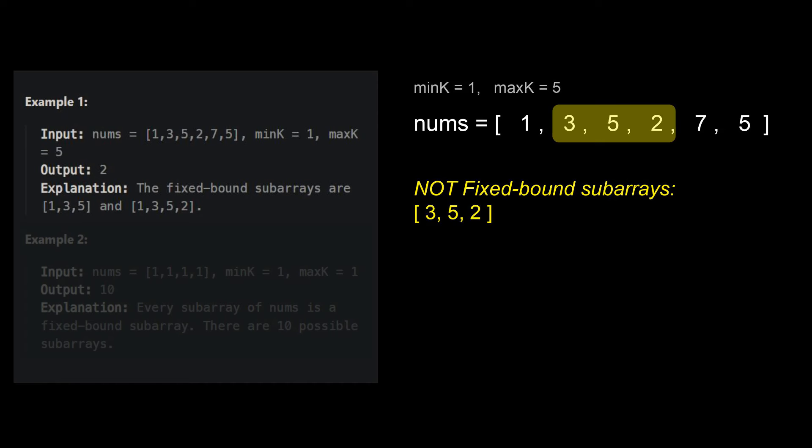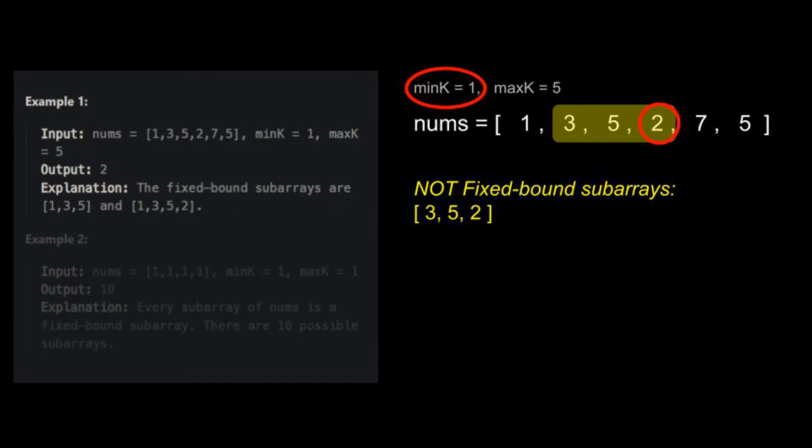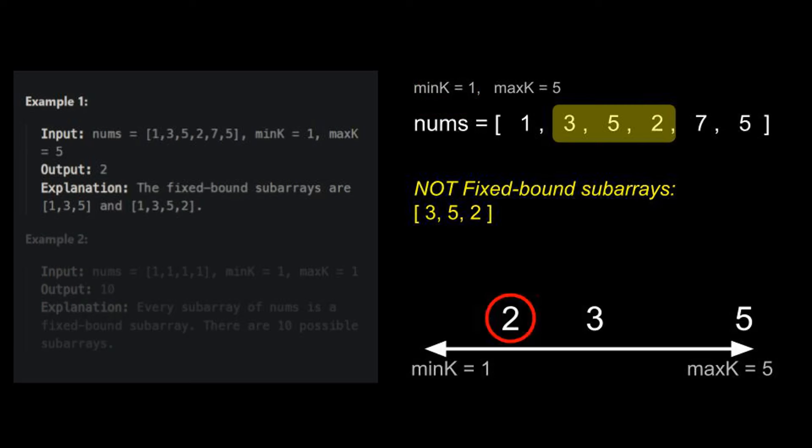More interestingly, 3, 5, 2 is also not a valid fixed bound subarray because even though its minimum 2 is between 1 and 5, it's between min k and max k, 2 is not exactly equal to 1, which disqualifies it.